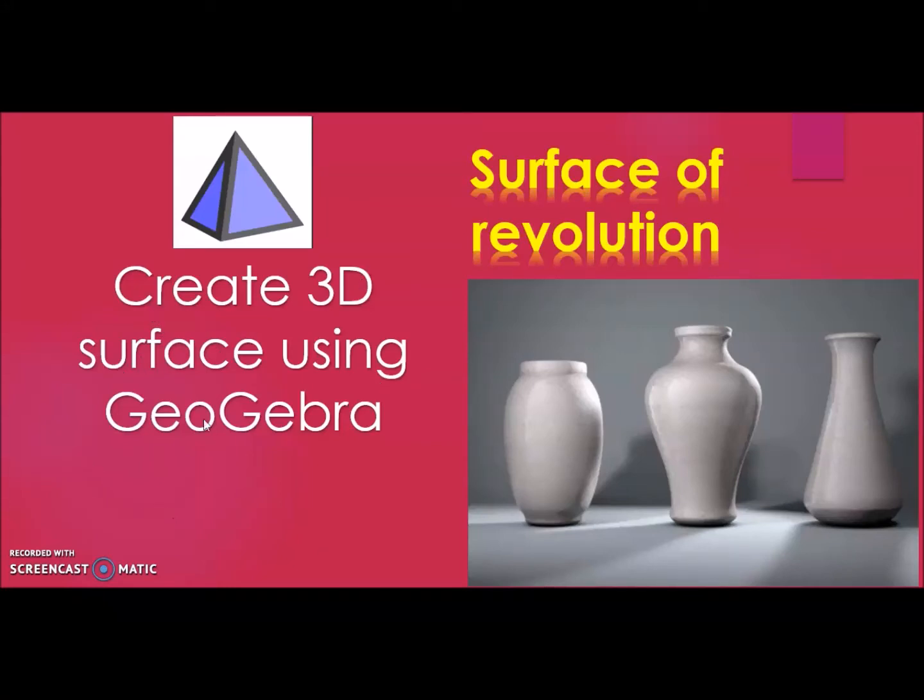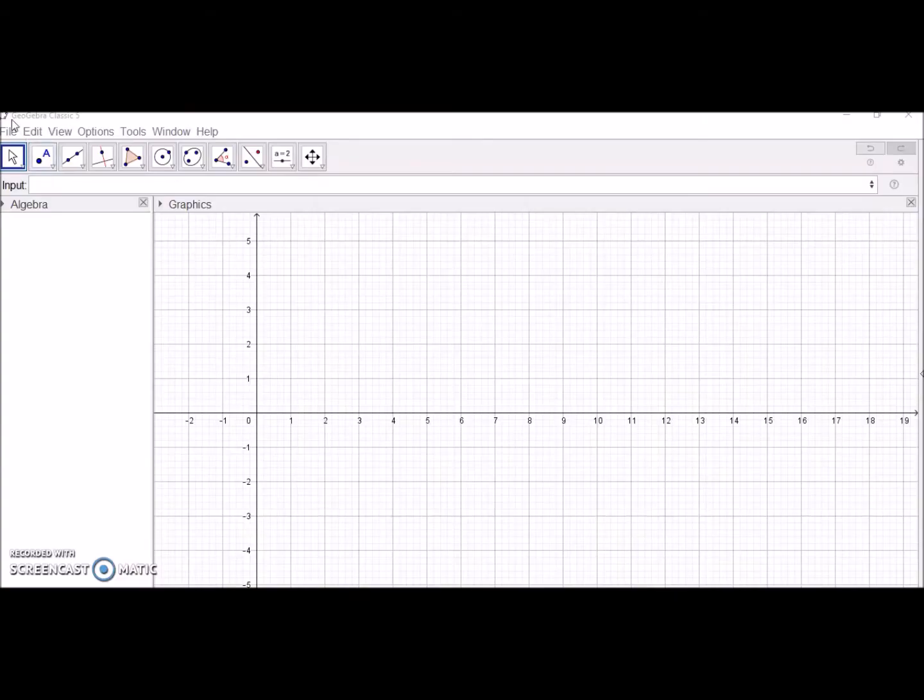Hi everyone, let's use GeoGebra for surface of revolution to create 3D surfaces and shapes. It's pretty easy. I'm using GeoGebra Classic 5. First of all, I need to insert an image.